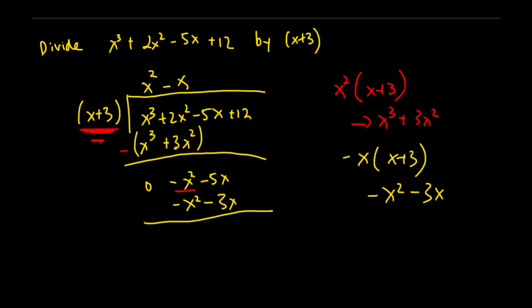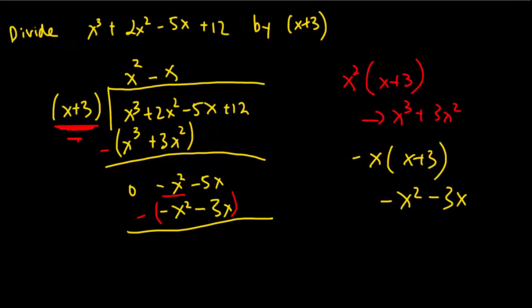Now again, minus, guys. This is a very common mistake that people do, is that they don't realize the whole thing is negative at the bottom. So negative x squared minus minus x squared. That will become 0. And then negative 5 minus minus 3. That will just be negative 5 plus 3. So that's negative 2. And then you drag this thing down. So that will be plus 12.